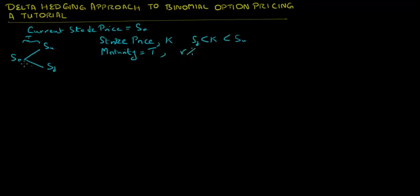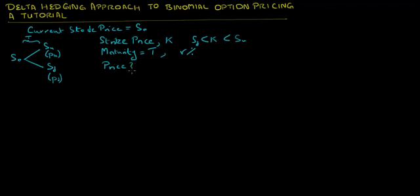The continuously compounded interest rate over this time period T is R%. Let the payoff of this option, if the stock price goes up to SU, be denoted by PU. Similarly, if the stock price goes from S0 to SD, let the payoff of this option be PD. Given these parameters, we want to calculate the price of this option.